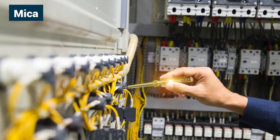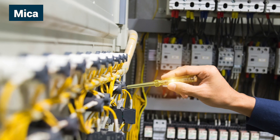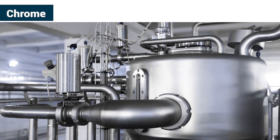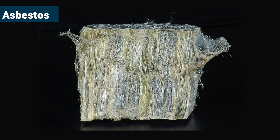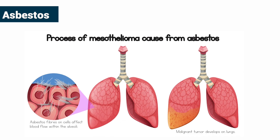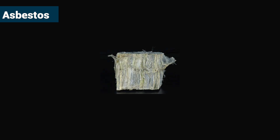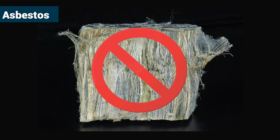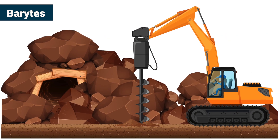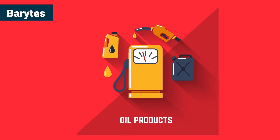Mica is also a non-conductor of electricity and heat. Chrome: It is used for preparing stainless steel, utensils and storing acids. Asbestos: It is a heat-resistant mineral used in industry and household roofing. It has been discovered that it is bad for health and is currently banned all over the world. Barites: Barites is extracted from barium. It is used in drilling deep holes for petroleum and natural gas.